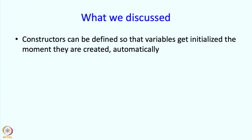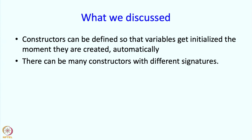What have we discussed in this segment? We have said that constructors can be defined so that variables get initialized automatically the moment they are created. There can be many constructors with different signatures. Next we are going to talk about something called operator overloading. But before that, we will take a quick break.